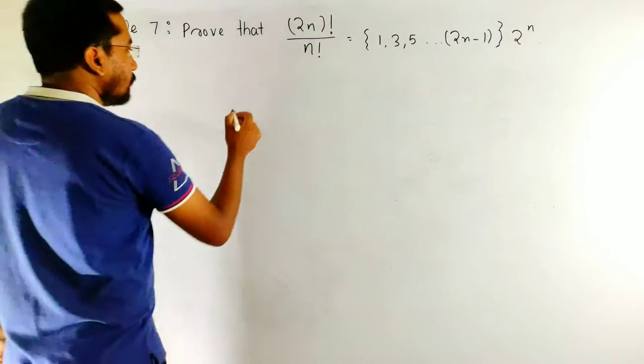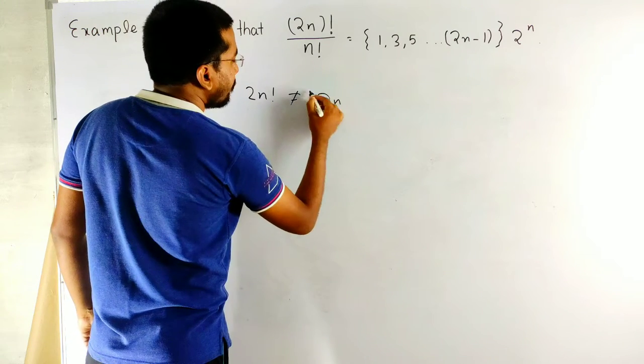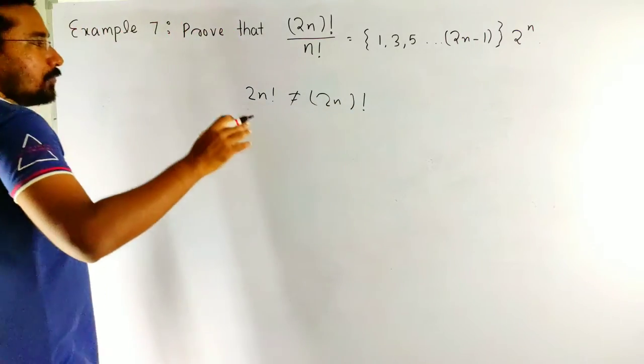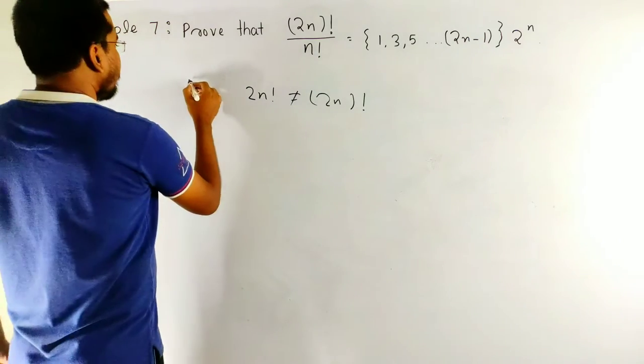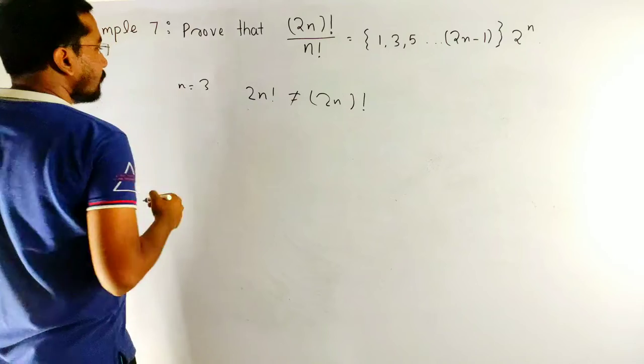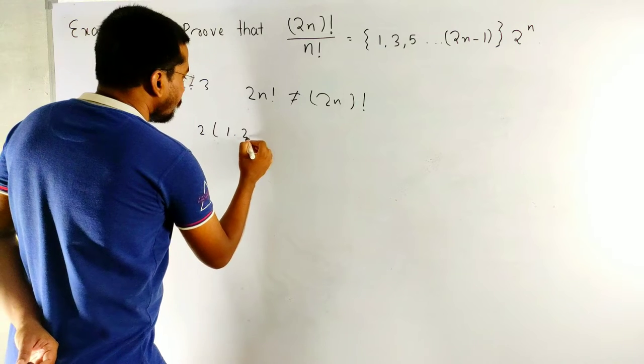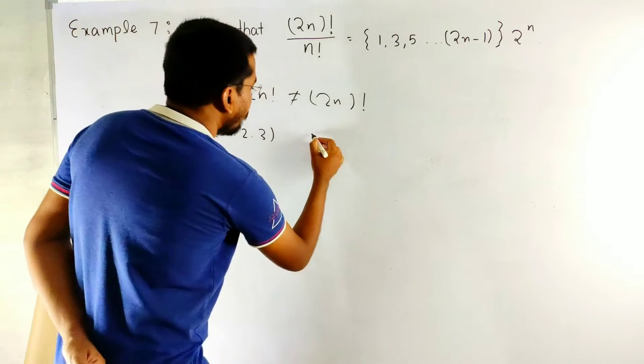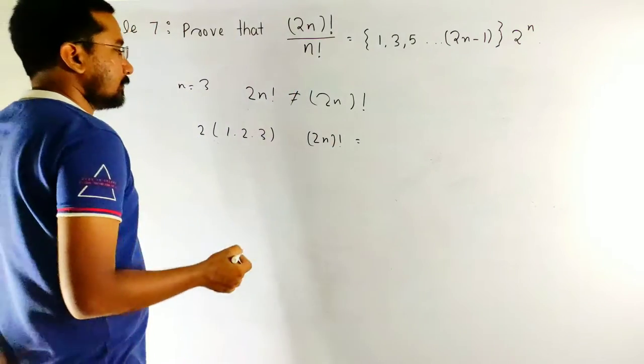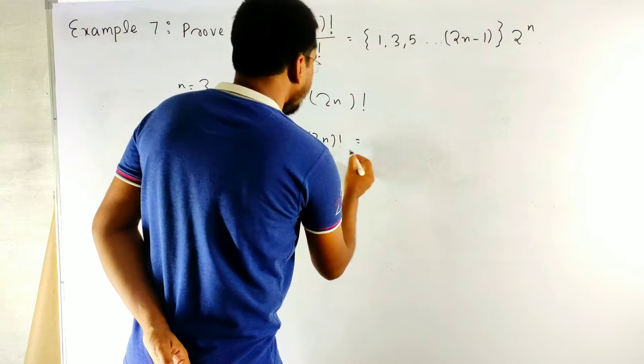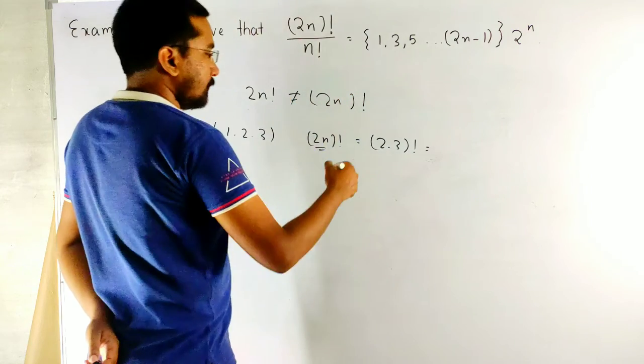First, 2n factorial not equal to 2n to the power whole factorial. You have to be cautious about that. What is 2n factorial? Let's say n equal to 3. 2n factorial means 2 into 1 into 2 into 3. And 2n whole factorial equal to 2n means 2 into 3 whole factorial equal to 6 factorial.